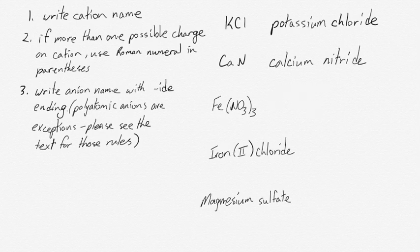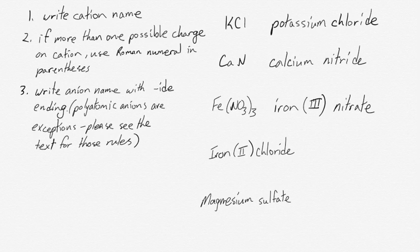And what we do to name this is we write the metal name, iron, and we specify that it's the iron three cation, and then we just write nitrate. We don't need to clarify that there are three nitrates. That's implied by the roman numeral three that belongs to the iron. If iron is a three plus charge, however many nitrates there are, they have to give you three negative charges to balance that out. And if you happen to know it or you don't know it and you look it up, you can find that nitrate is one minus, and therefore there have to be three of them.